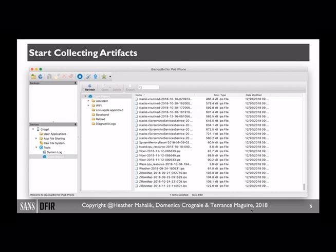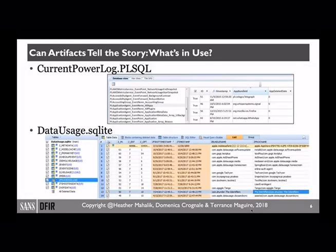Because we have limited access to application data, we may have to think outside of the box. So what is using the power? If you take a look at the currentpowerlog.plsql — it's essentially a SQLite database which contains power events for that device. We've already narrowed down a time frame to examine, so you can go specifically into that database and start looking at events that happened around that same time. Another really good file to examine would be the datausage.sqlite file, another SQLite database. In particular, the two tables of most interest are probably the Z_PROCESS and the Z_LIVE_USAGE tables within that database. They'll be able to correlate timestamps along with different services or installation packages that have been run or utilized on the device.